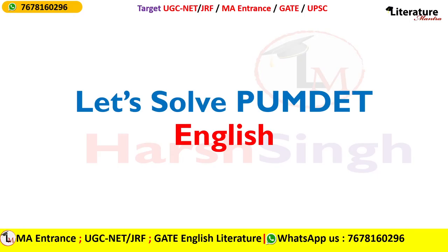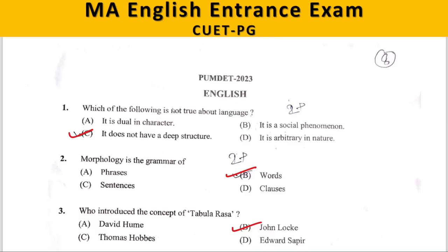Now let us refer to the question paper of PUMDET 2023. First question: which of the following is NOT true about language? A. It is dual in character. B. It is a social phenomena. C. It does not have a deep structure. D. It is arbitrary in nature. The correct answer is C — 'it does not have a deep structure.' In fact, it does. If you have read Noam Chomsky's idea of deep structures, you know that language does of course have a deep structure. So, since the question asks what is NOT true, the answer is C.